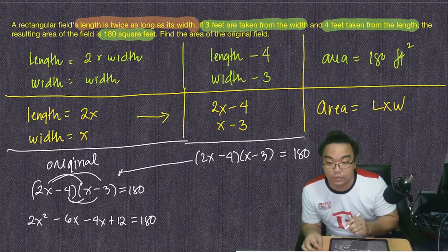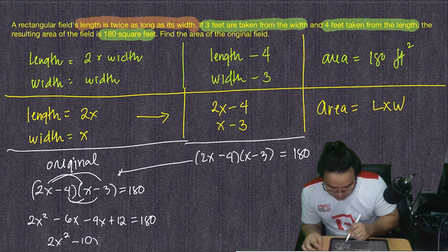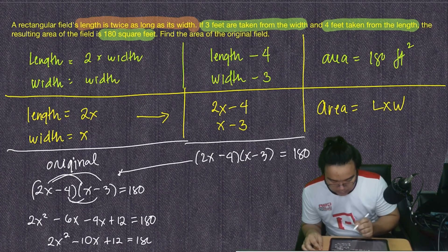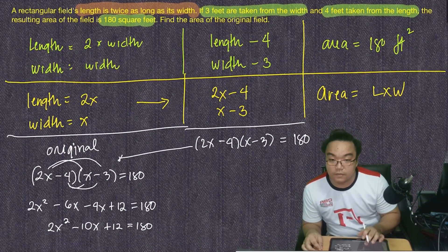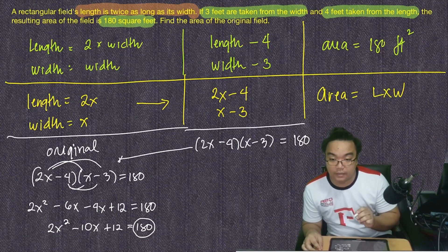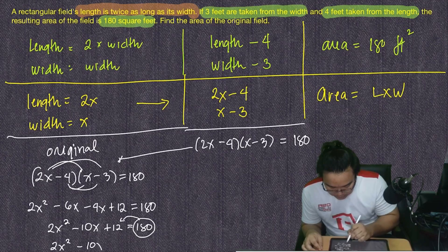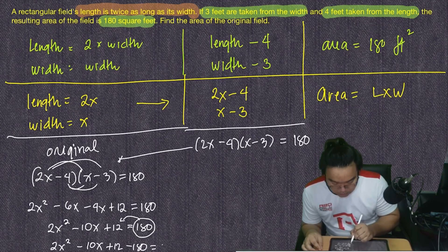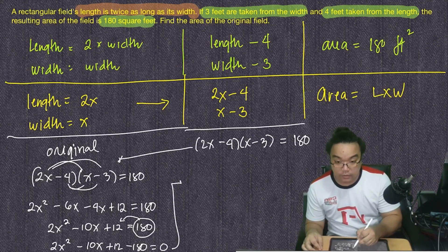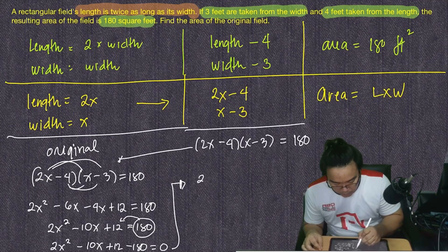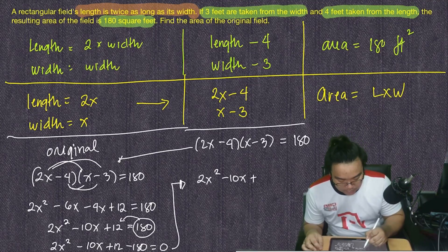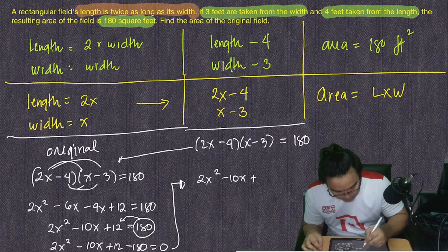Since this is a quadratic equation, we combine like terms: 2x² − 10x + 12 = 180. We then transpose 180 to the left side, giving us 2x² − 10x + 12 − 180 = 0, which simplifies to 2x² − 10x − 168 = 0.